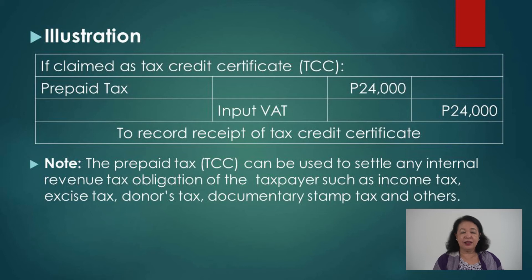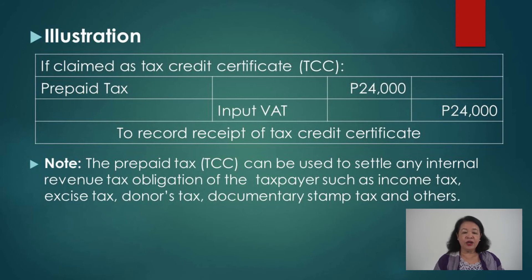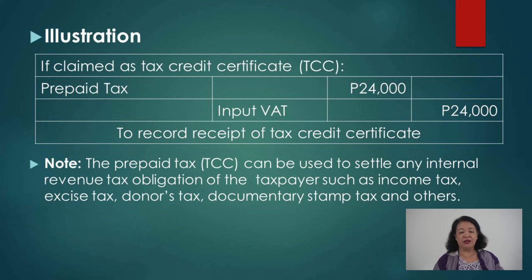If the input tax of 24,000 is claimed as a tax credit certificate: debit Prepaid Tax 24,000, credit Input Tax 24,000 — to record the issuance of the tax credit certificate. It is recorded as a prepaid tax because it has not yet been used to pay a tax obligation. The prepaid tax (TCC) can then be used to settle any internal revenue tax obligations such as income tax, excise tax, donor's tax, documentary stamp tax, and others.